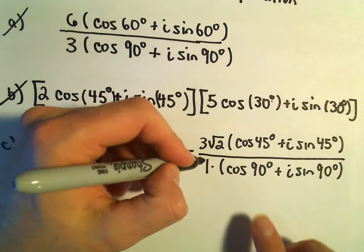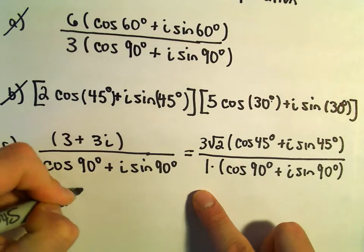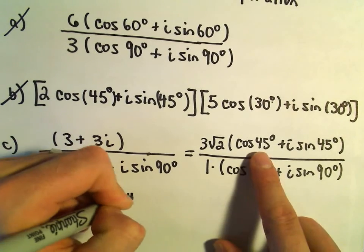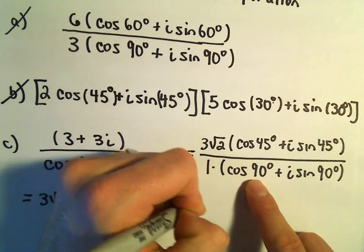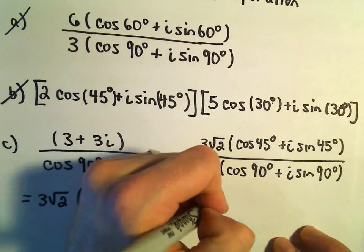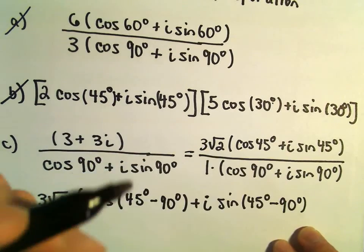So in this case, if we take 3 root 2 over 1, we'll just be left with 3 times the square root of 2, and then we would just have cosine of 45 degrees minus 90 degrees plus i times sine of 45 degrees minus 90 degrees.